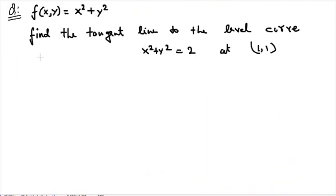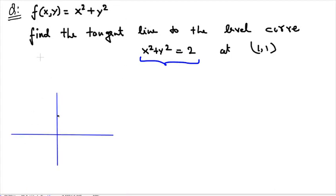Let's see this with an example. Suppose my two-variable function is f(x,y) = x² + y², and our job is to find the tangent line to the level curve at height 2. So the level curve we are looking at is given by x² + y² = 2, and we are interested in finding the tangent line to this level curve at the point (1,1). We all know what this level curve looks like — it should be a circle — and our point is somewhere around (1,1). We are interested in finding the equation of this tangent line.